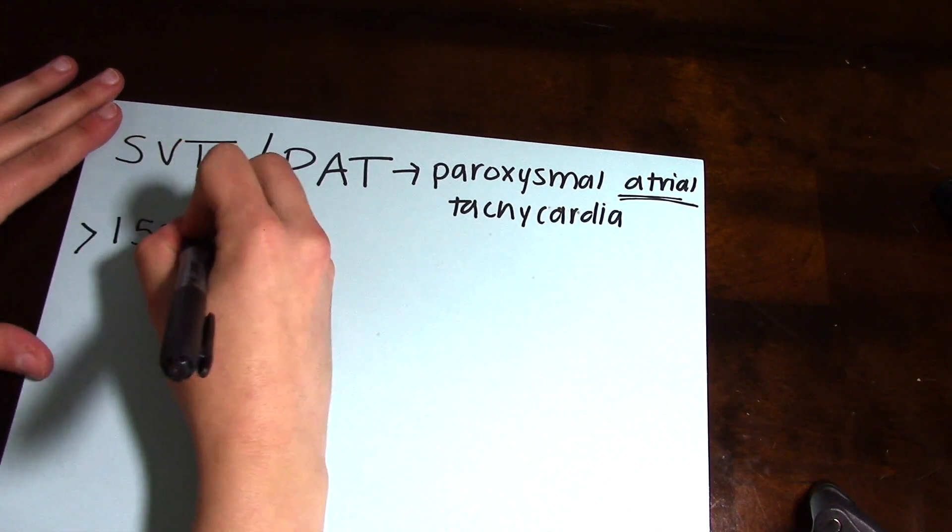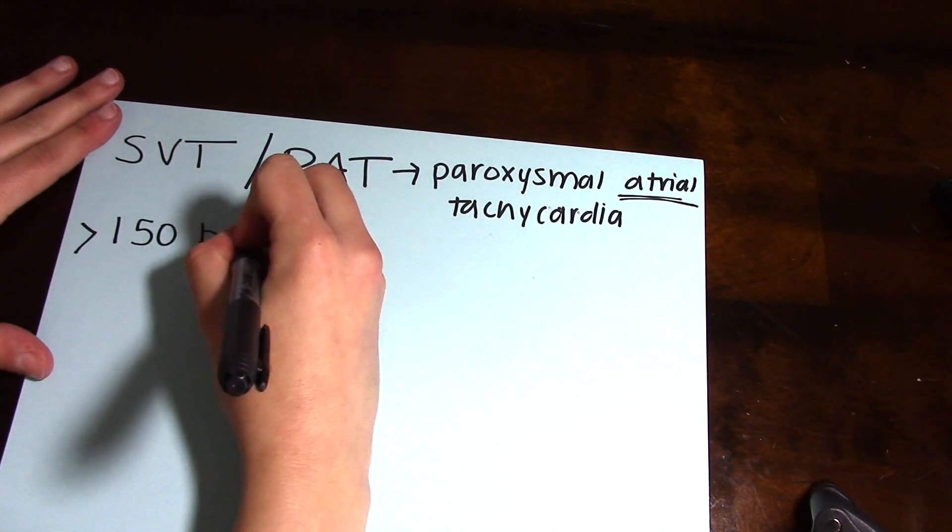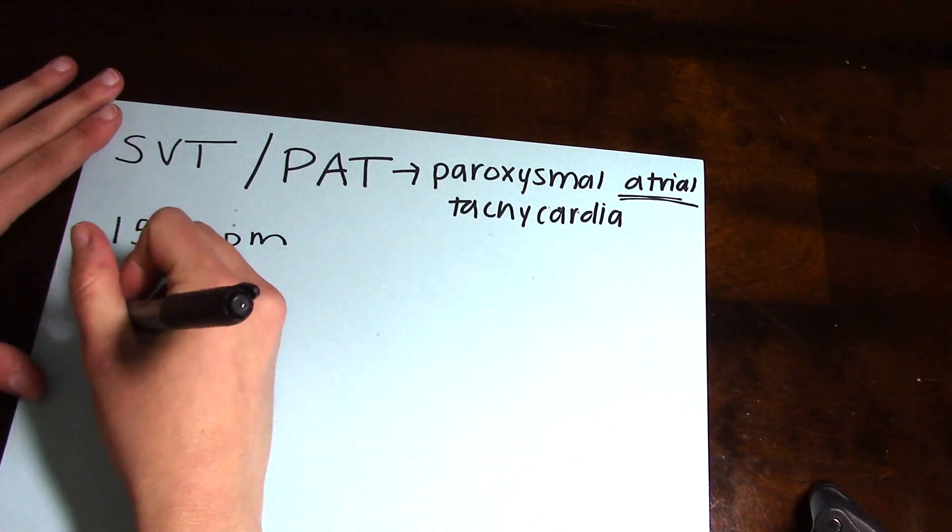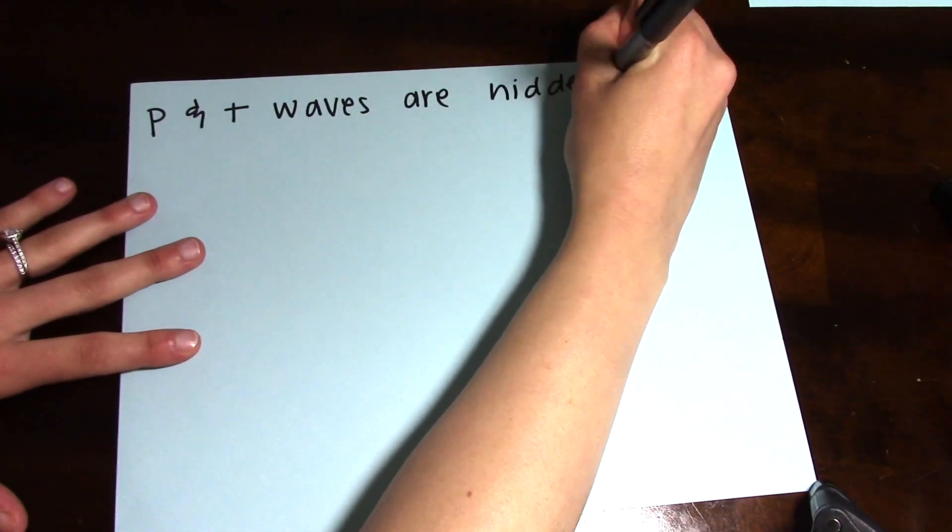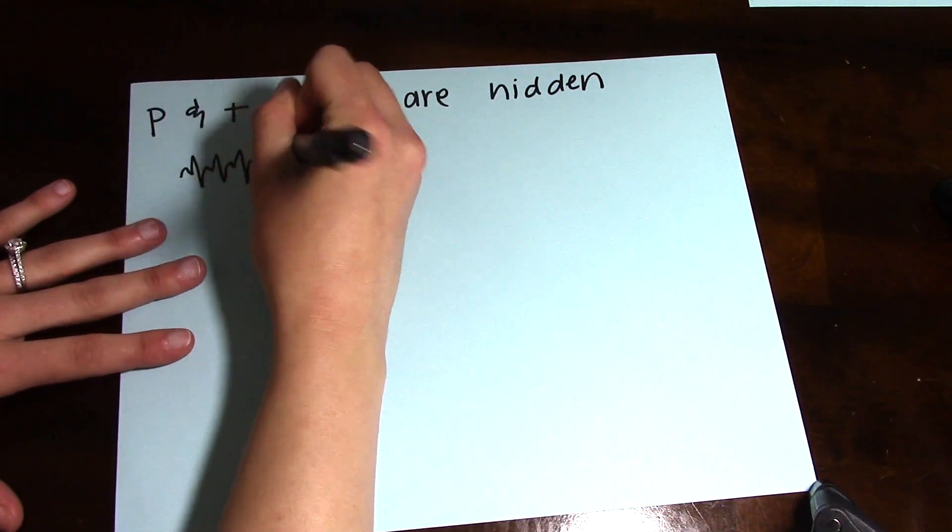In SVT, the rate is typically greater than 150 beats per minute. Now this doesn't mean if you have a rate greater than 150 beats per minute it's automatically SVT, because in SVT the P waves and T waves are hidden.